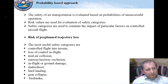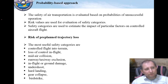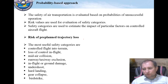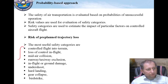In our approach we propose to use probability values to control air traffic at a particular region. The safety of air transportation is evaluated based on probabilities of unsuccessful operations. Risk values are used for evaluation of safety categories, and safety categories are used to estimate the impact of particular factors on controlling aircraft flight. We propose to use risk of pre-planned trajectory loss as the main probability value for air traffic management.